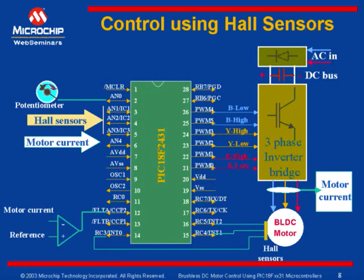A potentiometer — in this example I have taken a potentiometer — is used to give a speed reference or speed command to the microcontroller. The speed command can also be digitally controlled or digitally input from a PC or another master controller interface using the SSP module.